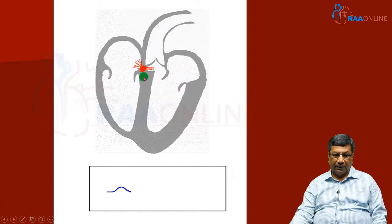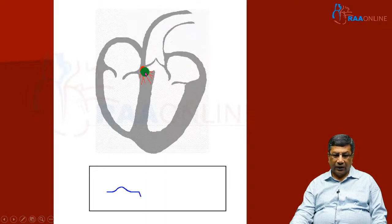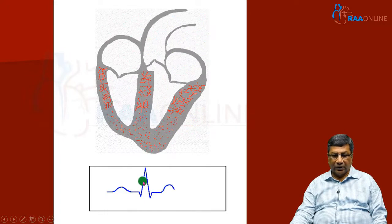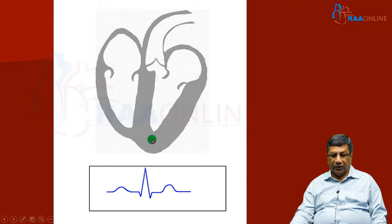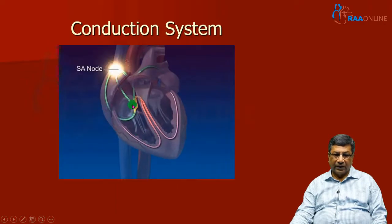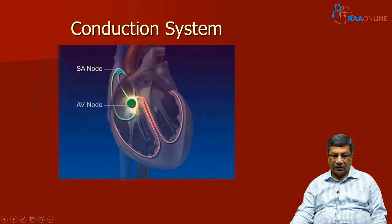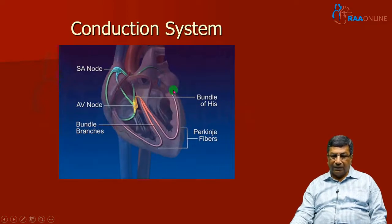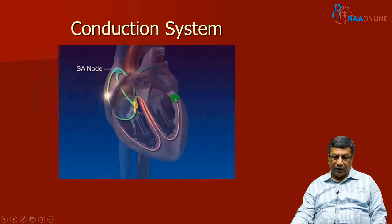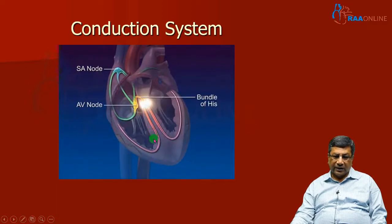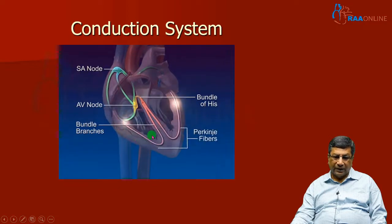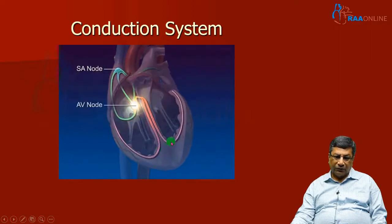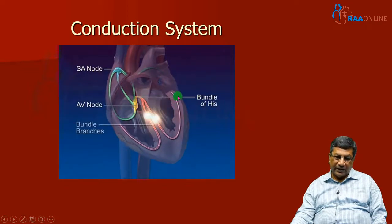The P wave is due to atrial activation, followed by AV nodal delay in the PR segment, then ventricular depolarization as QRS, then the ST segment and T wave. The QRS represents ventricular depolarization, which takes a very short time. When the impulse travels from the sinus node through the AV node, it passes through the specialized conduction system of the heart very rapidly, simultaneously depolarizing both right and left ventricles at very fast speed. These specialized conduction fibers conduct impulses at around 4 meters per second, so both ventricles are depolarized simultaneously and very quickly.